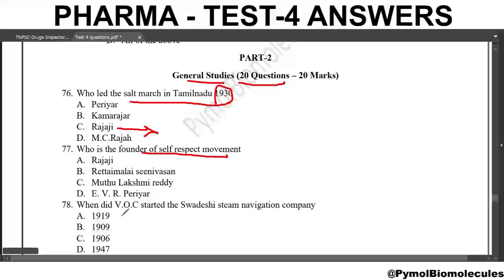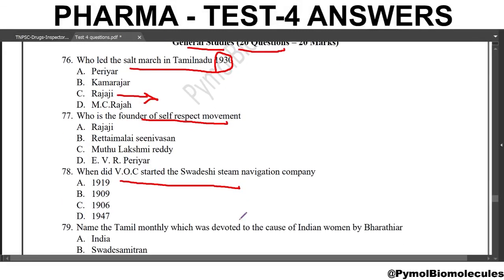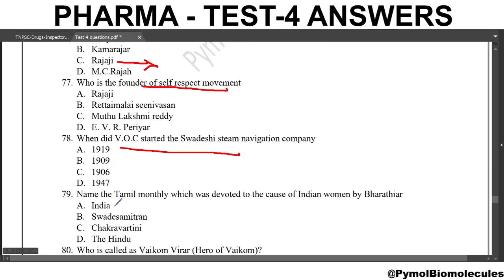Next question: when did V.O.C. start the Swadeshi Steam Navigation Company? The answer is 1906. Next question: name the Tamil magazine which was devoted to the cause of Indian women by Bharatiyar. All these papers were run by Bharatiyar, but exclusively for women he started the Chakravarthini.